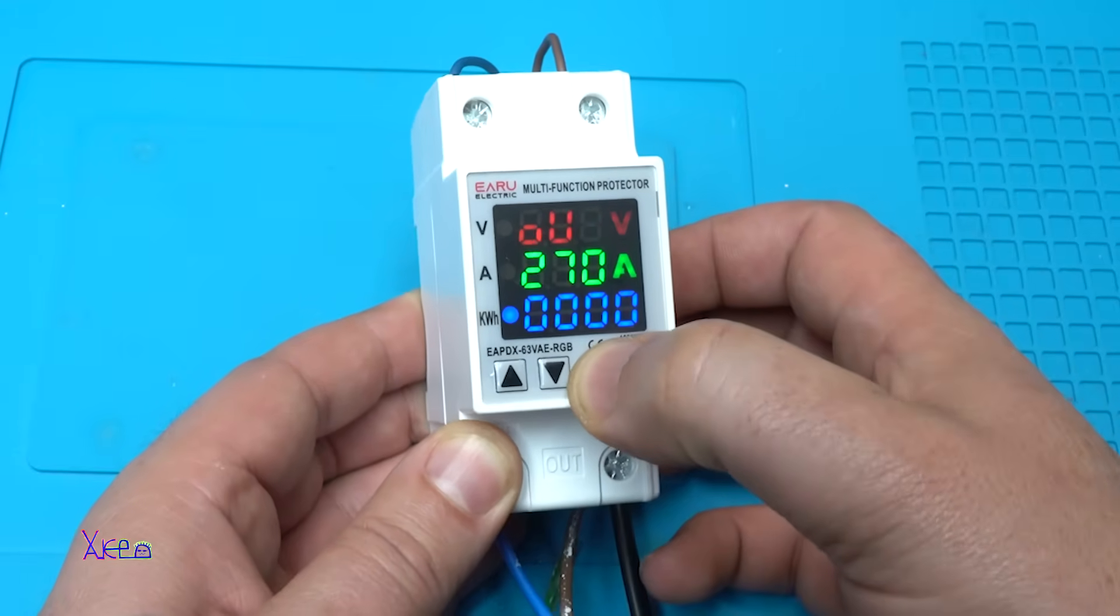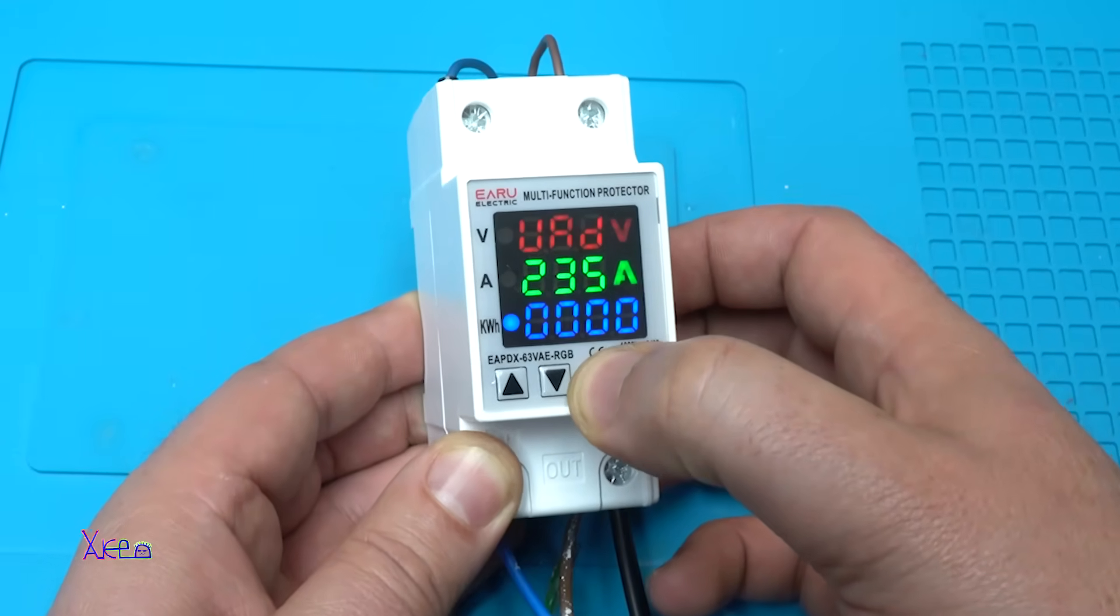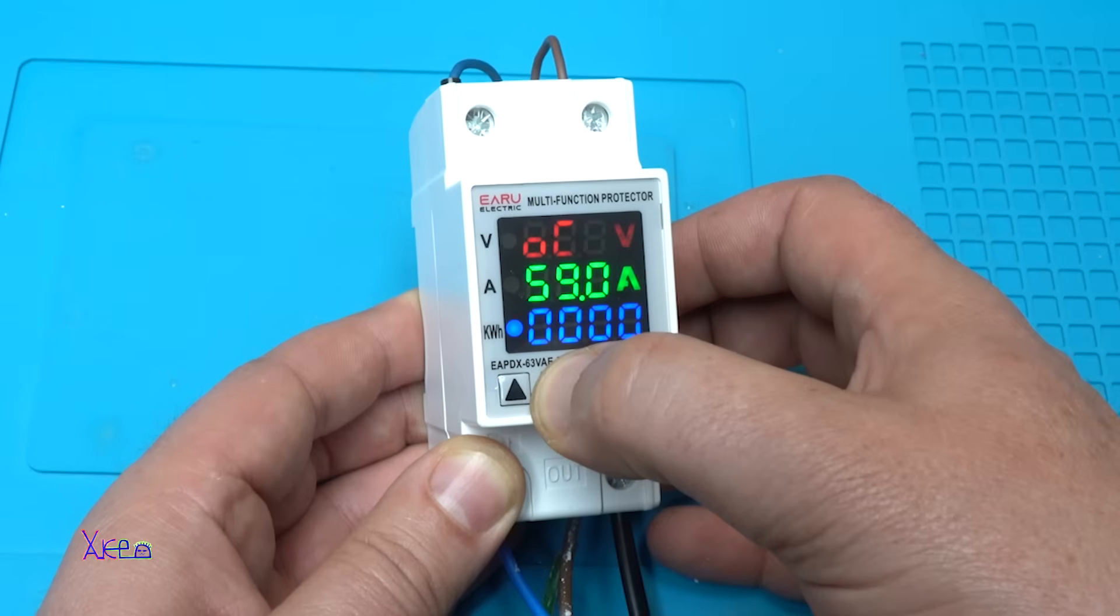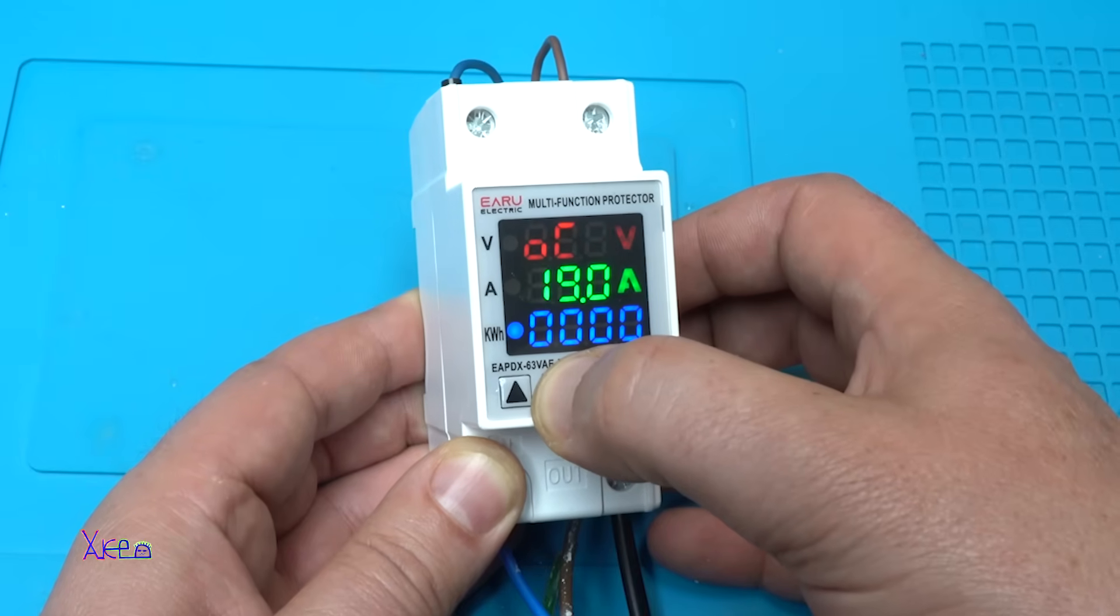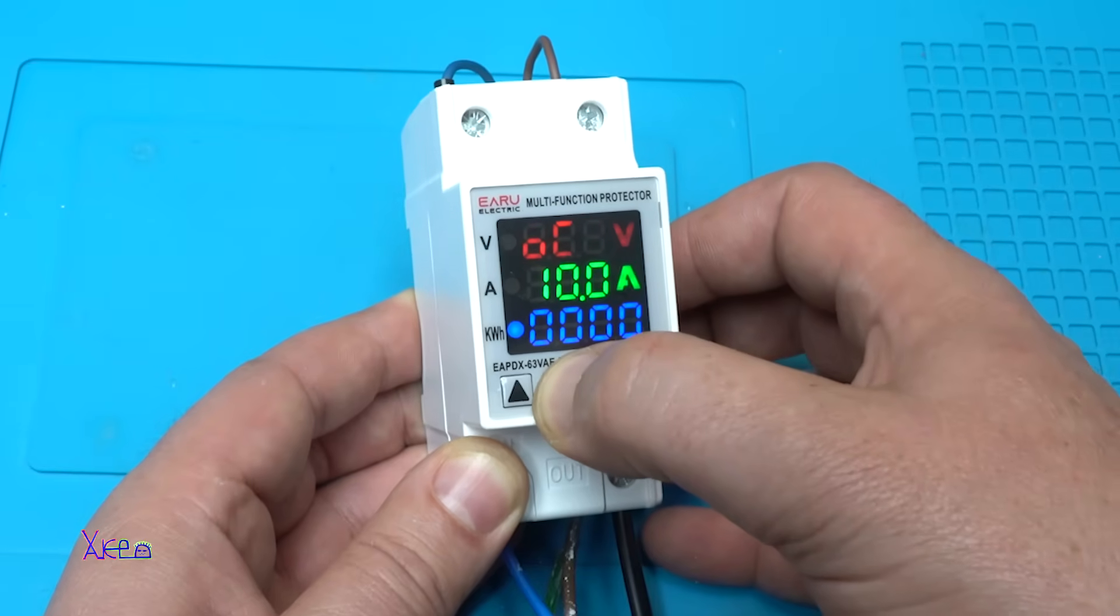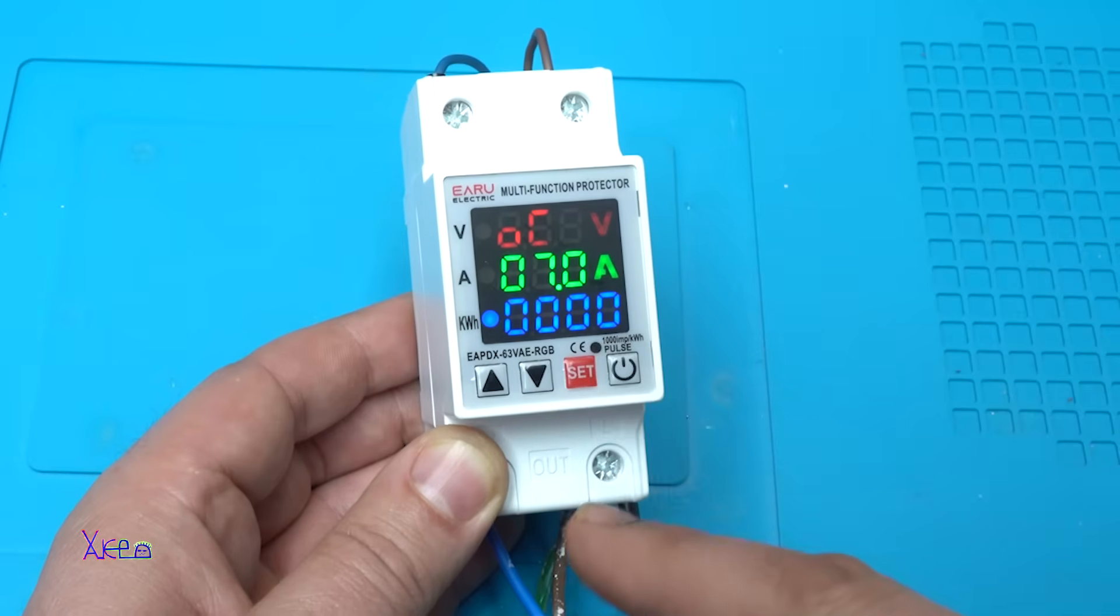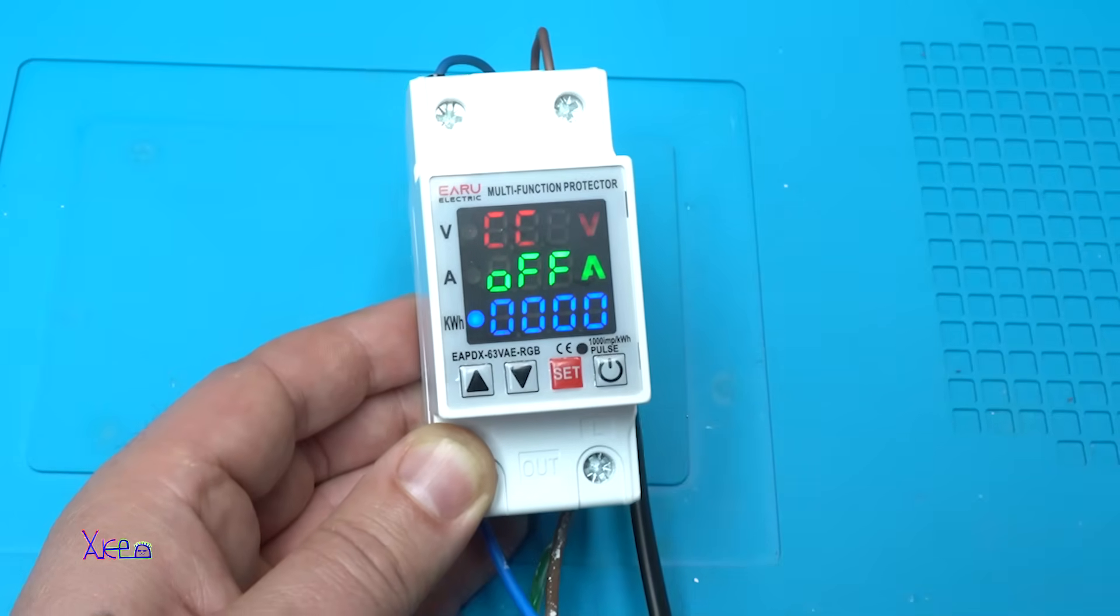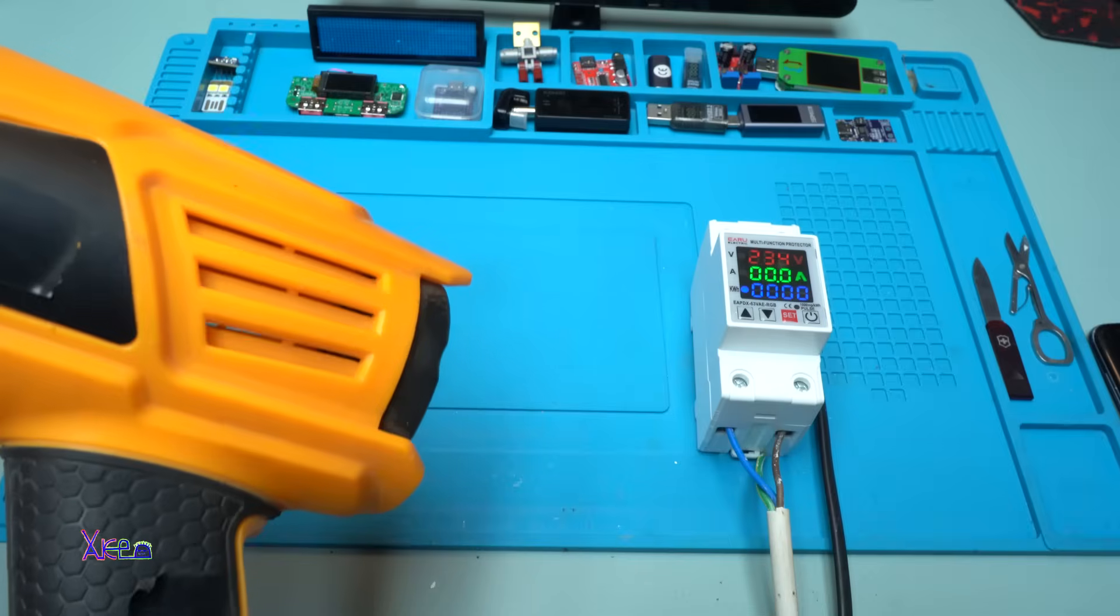Now I'm going to set the over current protection. And it says OC. And it's set on 63 amperes. I'm going to adjust that to 7 amperes. That is the current that I want to show you something. Yes. 7 amperes. Leave it like this. Or just go to the next settings. And you will go out of the menu. Or hold the power button. Yes. Okay.